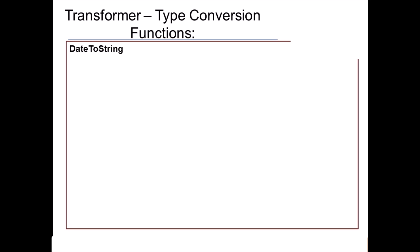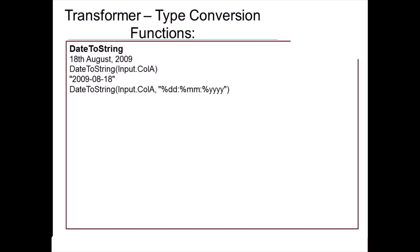Date to string: your input is a date — for example, 18th August 2009. Using DateToString(input.column_A, '%dd:%mm:%yyyy'), you get the output formatted as '18-08-2009'. You define the format using %dd, %mm, %yyyy placeholders, and the output will be in the specified format.